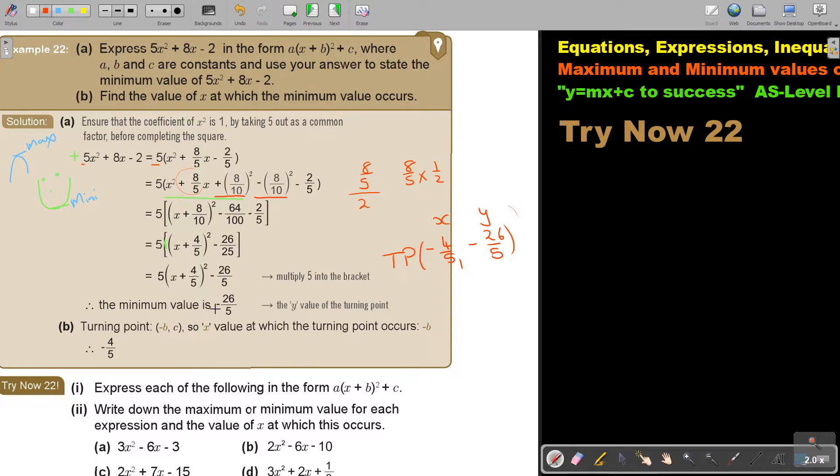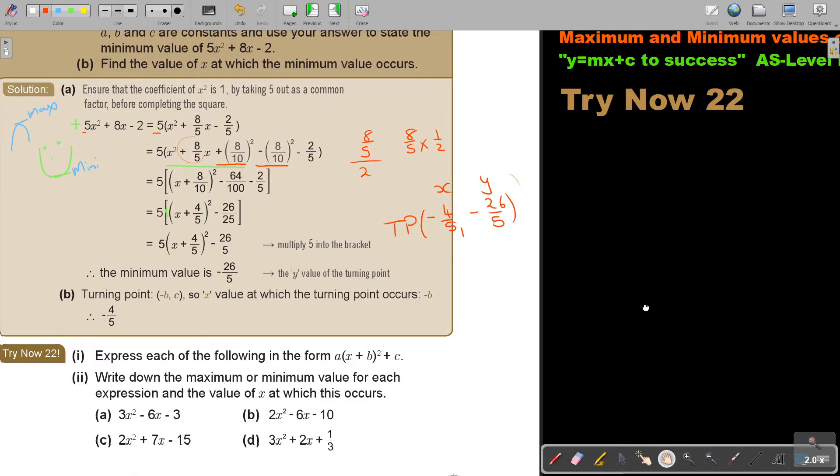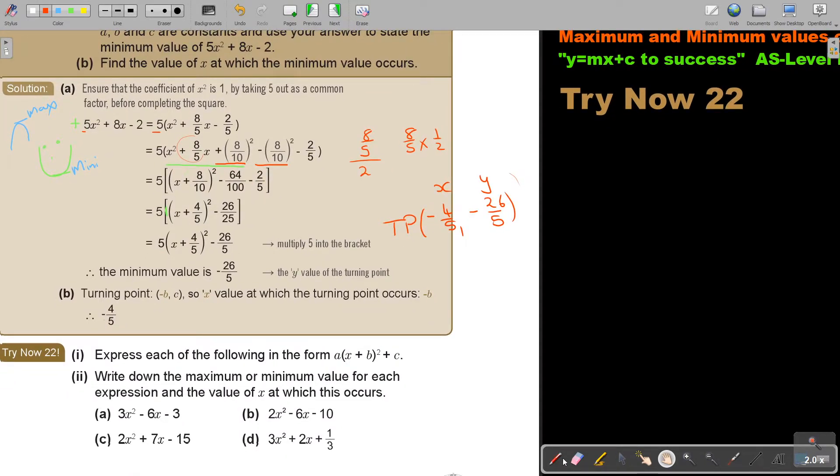And that y value will be the minimum point. So the minimum value is this. And then the next question, find the value of x at which this minimum value occurs. So the value of x will then be that negative 4 over 5. I want you to stop the video, and I want you to do number A and D. You can continue the video as soon as you are finished.